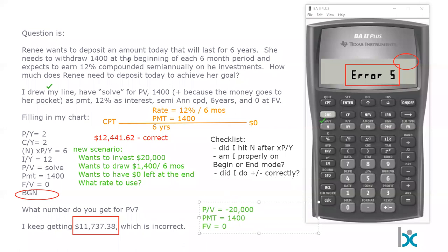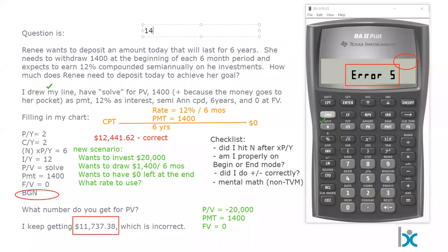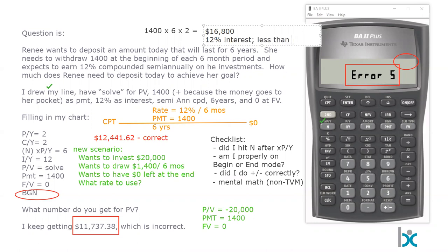What does the mental math show? I think this is worth looking at. A quick non-time-value-of-money sanity check: she's drawing $1,400, and going back to the original question that's $1,400 times six times two periods, which gives $16,800 total taken out. I know she's earning 12% interest, so the present value should be something less than that. If you get an answer more than $16,800, that probably doesn't make sense.